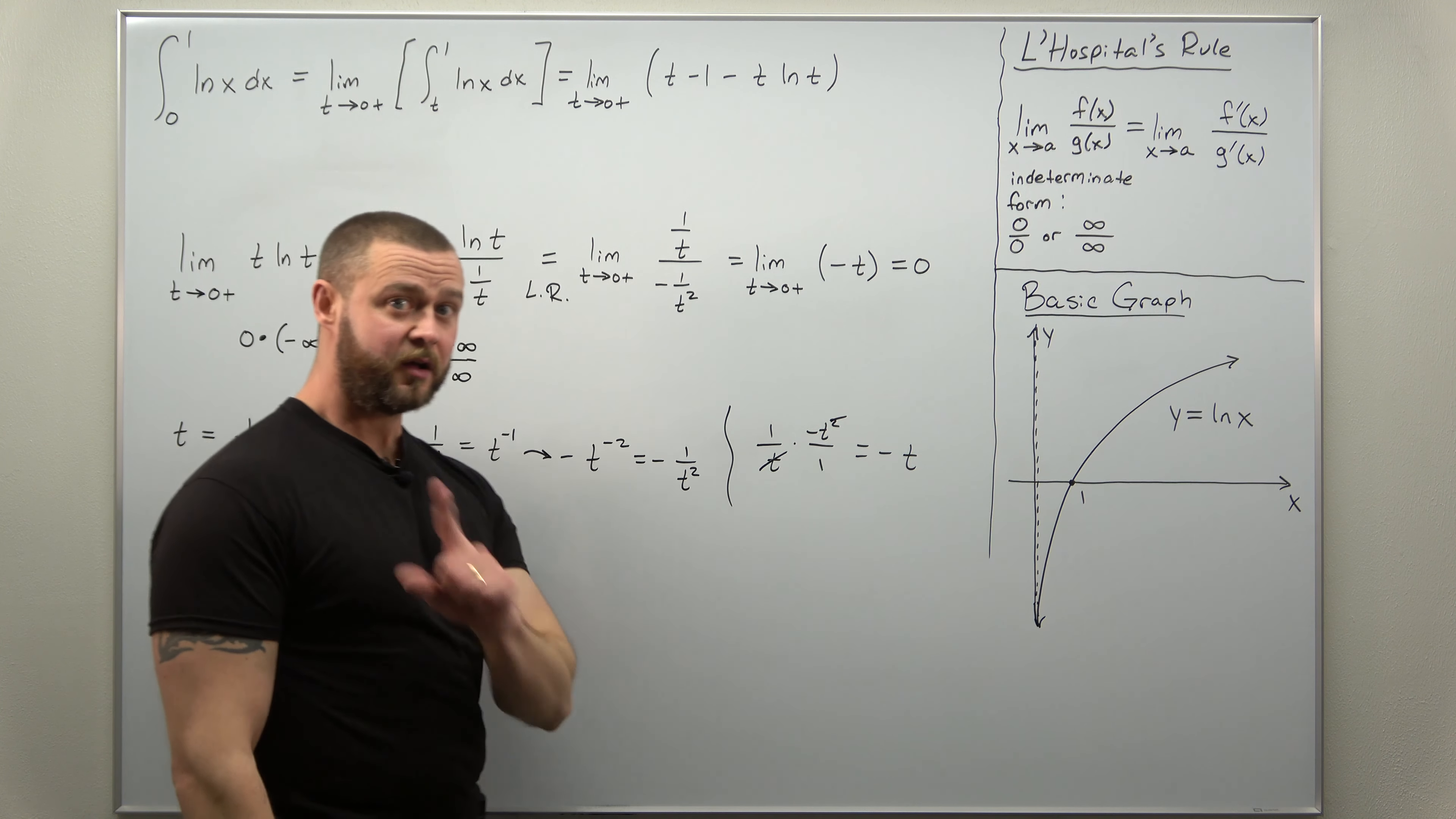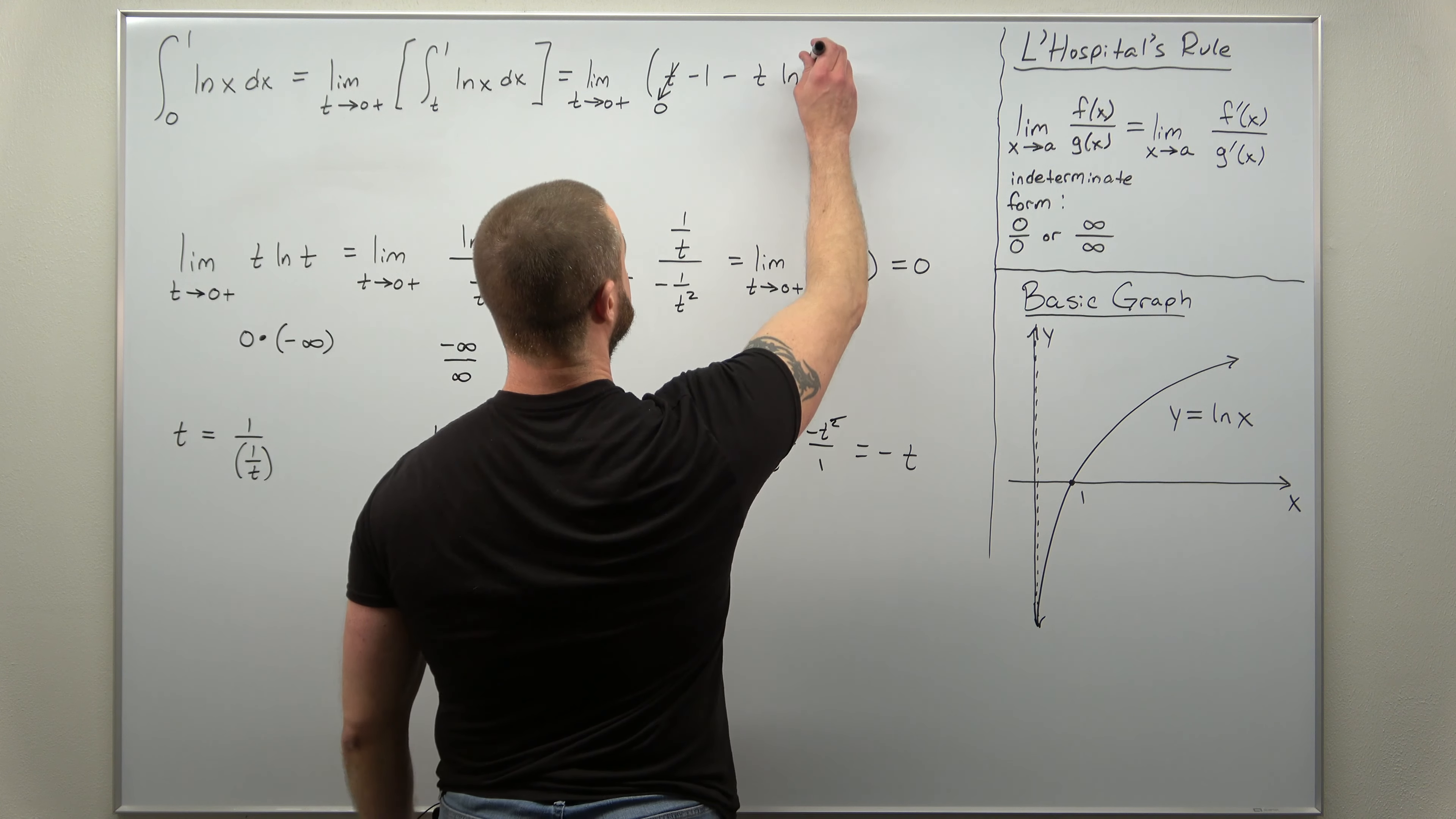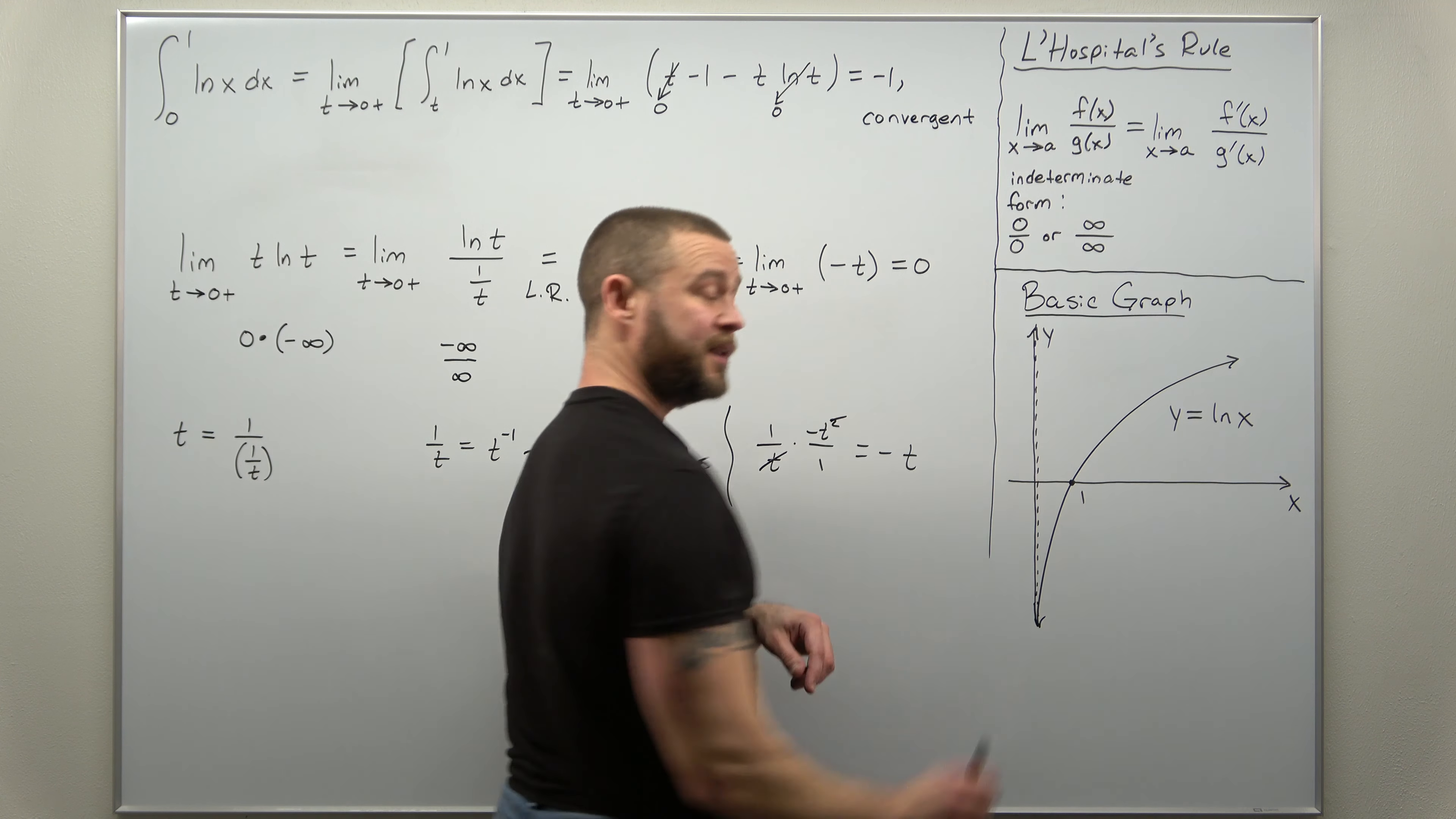Now, we're pretty much done. If we take the limit of each term, t, as t approaches 0 from the right, that approaches 0. We just went through L'Hospital's rule and verified that t ln t, that approaches 0. And notice what we're left with. The whole limit here exists and it approaches negative 1. Since the limit exists, our improper integral is convergent.